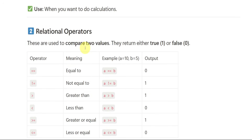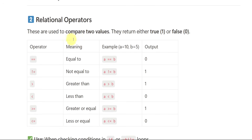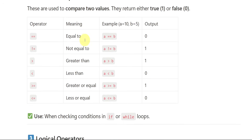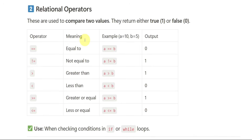Then we have relational operators. As we discussed, it compares two values. It will not tell you the exact values — it will just give output as 0 or 1. Zero means false, 1 means true.